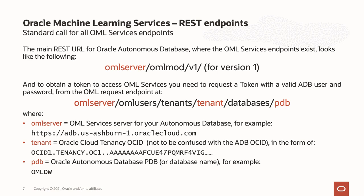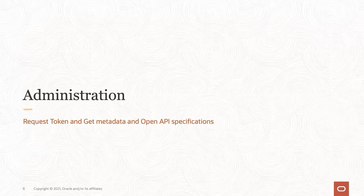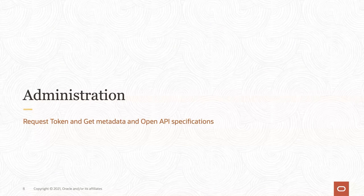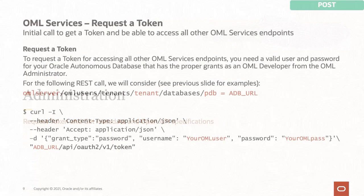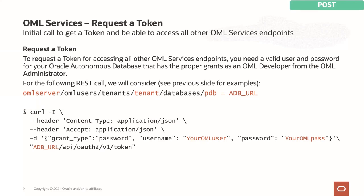Let's look at an example. The first thing you need to do to use OML Services from your Autonomous is to request a token. To request that token, you need an Autonomous Database user and password for that specific PDB. The user must be granted the Oracle Machine Learning Developer role by your OML administrator.